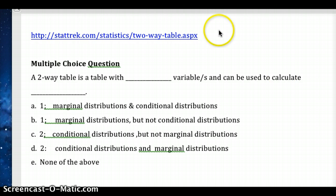Finally, here's a link that explains two-way tables more and is useful for our multiple choice question. A two-way table is a table with blank number of variables that can be used to calculate blank. Choose from the answers A, B, C, D, or E.